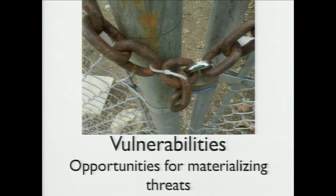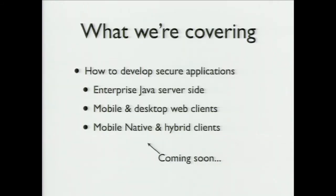You have threats because you might have vulnerabilities — opportunities to materialize threats, loopholes or problems with your procedures, perhaps a weak link. There are lots of different types of vulnerabilities: infrastructure vulnerabilities, application development issues. What we're going to be covering today is how to develop secure applications with Java EE and some JBoss projects.